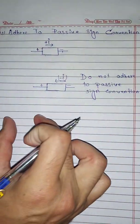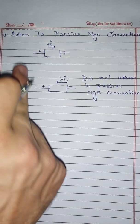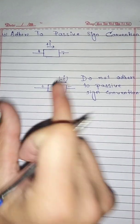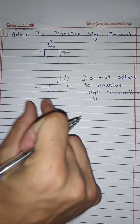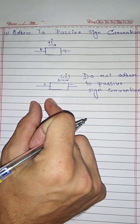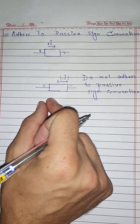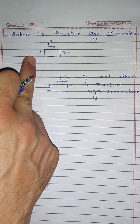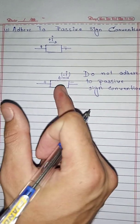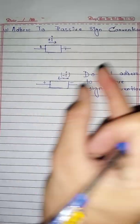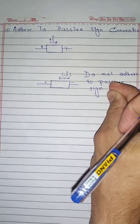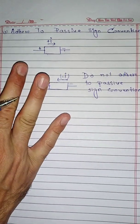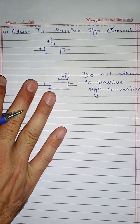Now the question arises that sometimes power is positive and sometimes power is negative. As stated earlier, consumed power will always be positive and delivered power will always be negative. However, this is not always straightforward because sometimes you encounter a circuit element where current flows from positive to negative, and sometimes from negative to positive. So there are four different possibilities, which we will now explain one by one in sequence.